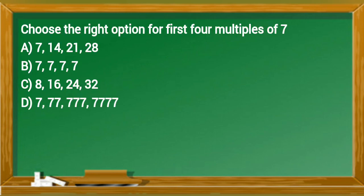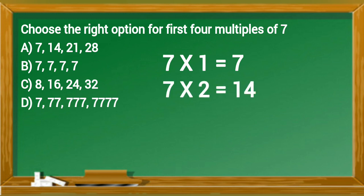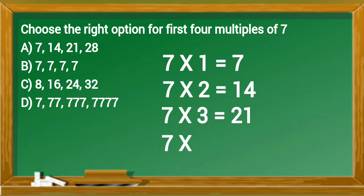Choose the right option for the first four multiples of seven. Seven multiplied by one equals seven. Seven multiplied by two equals fourteen. Seven multiplied by three equals twenty-one. Seven multiplied by four equals twenty-eight. So the first four multiples of seven are seven, fourteen, twenty-one, twenty-eight. Option A is the correct option.